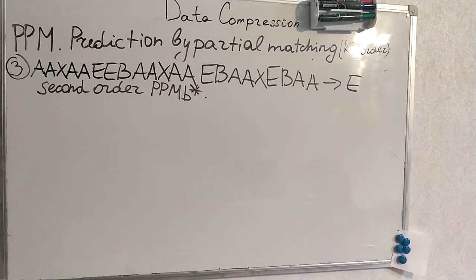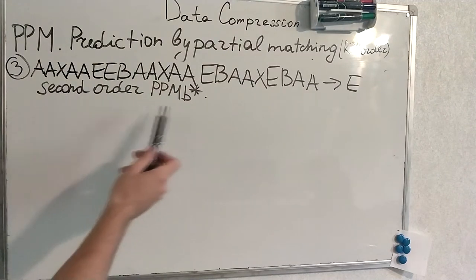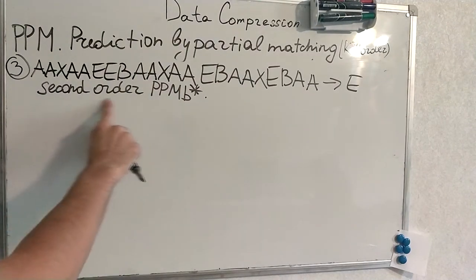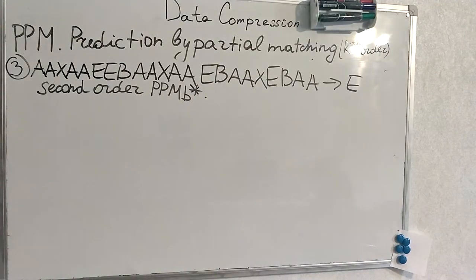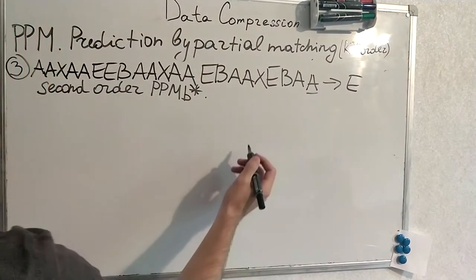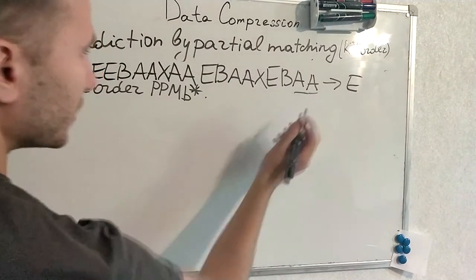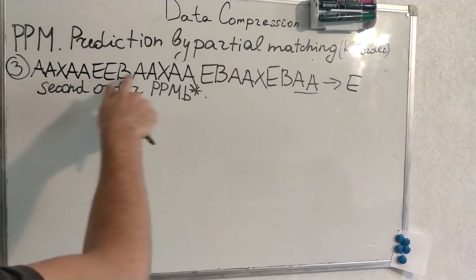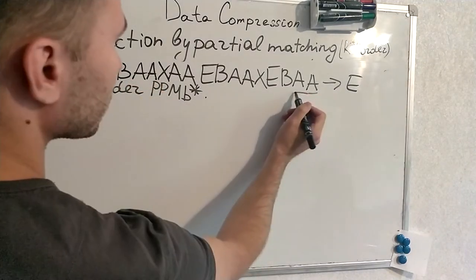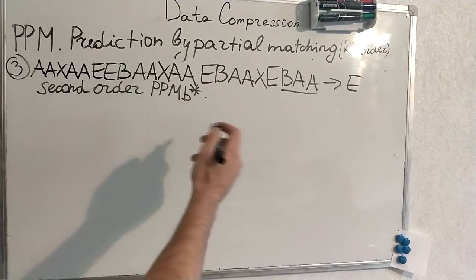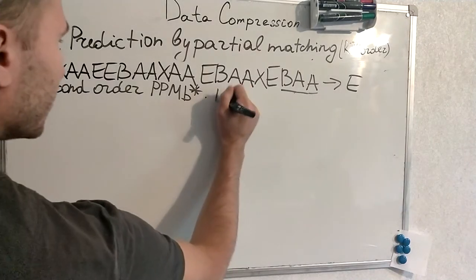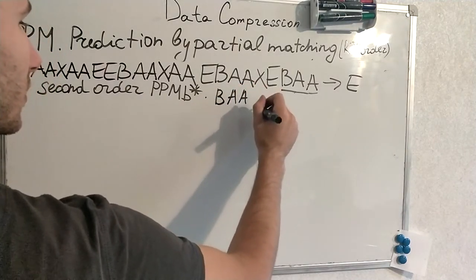Last example: we have a long sequence, the next symbol is E, and we use second-order PPM B*. With the star, we first try to find the shortest deterministic context. Context A alone is not deterministic. Context AA is not deterministic — it's followed by both E and X. Let's try BAA: BAA is always followed by X, so BAA appears to be the shortest deterministic context.